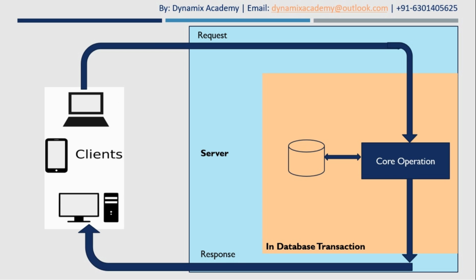Let us understand this with the help of a diagram. When you perform certain actions on the Dynamics 365 UI — for example, creating a sales record from your desktop, mobile, or any other supported client — those operations are passed as a request to the server. The server then passes that request message to the database server, performs the core operation, updates the database, and whatever updated records are returned are passed into the response object from the database back to the server and then back to the client.